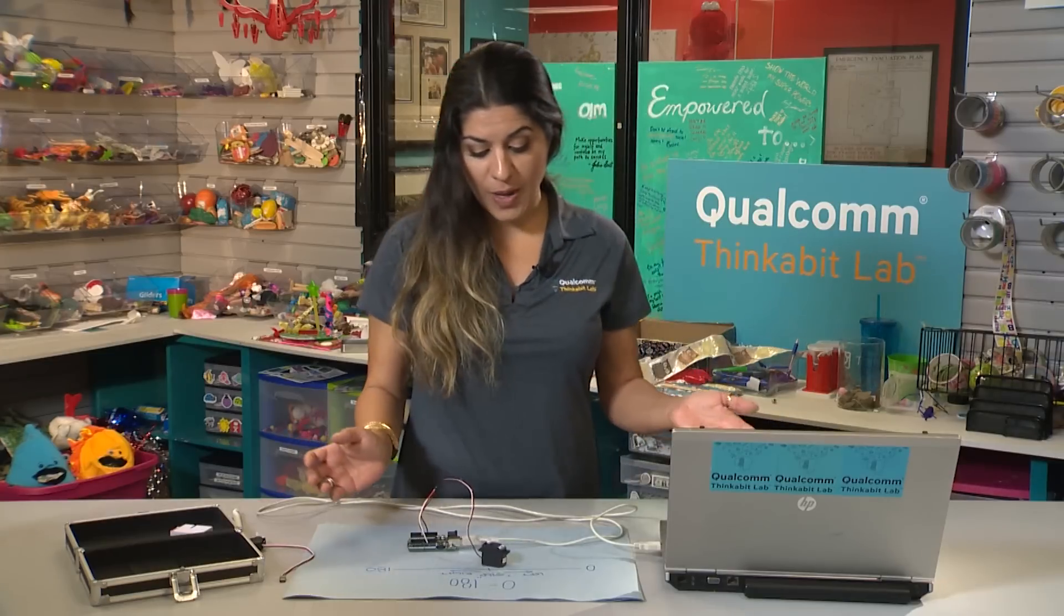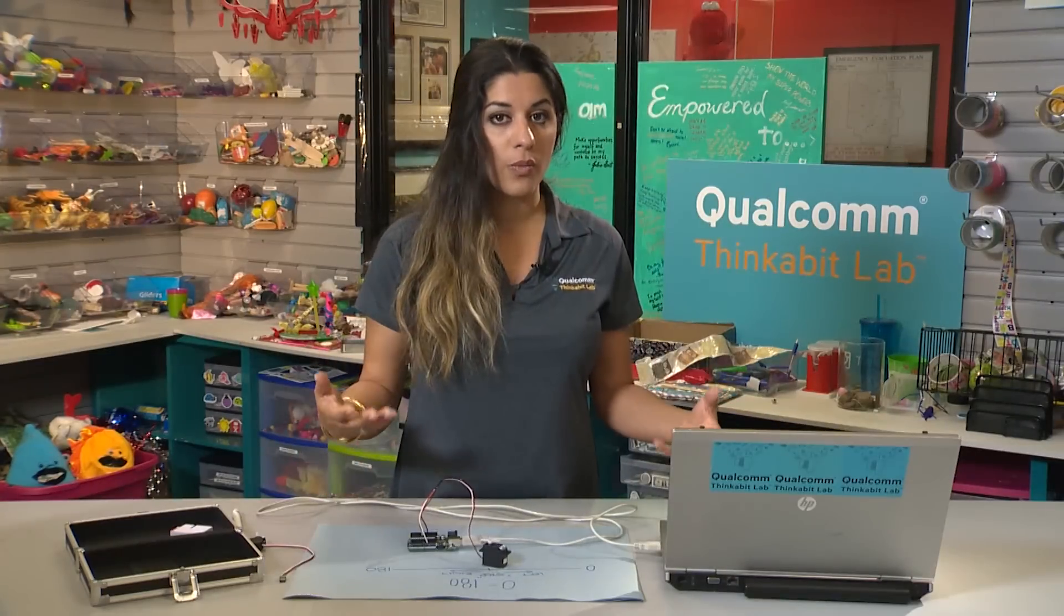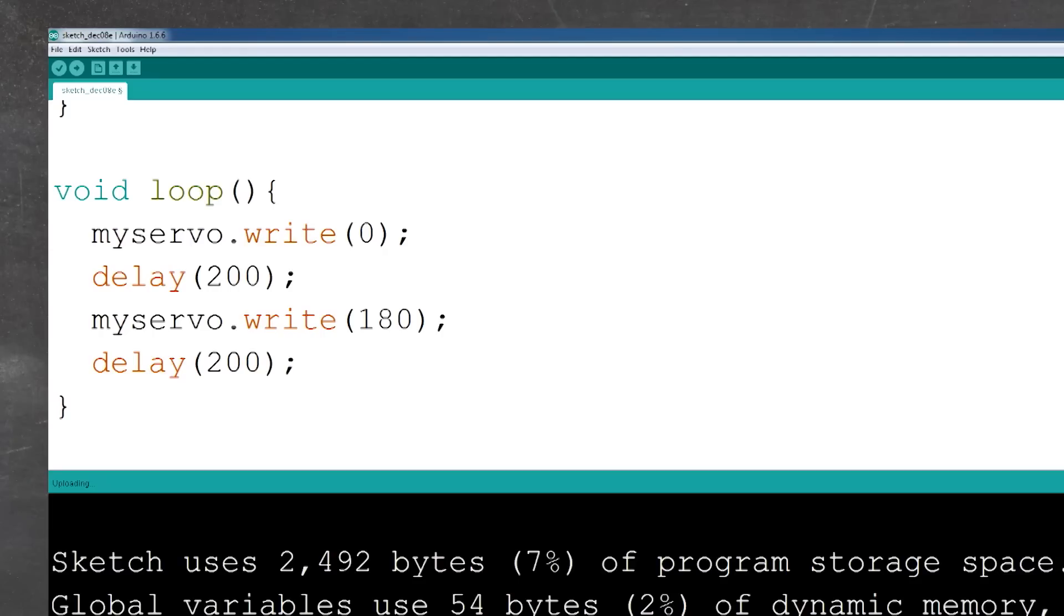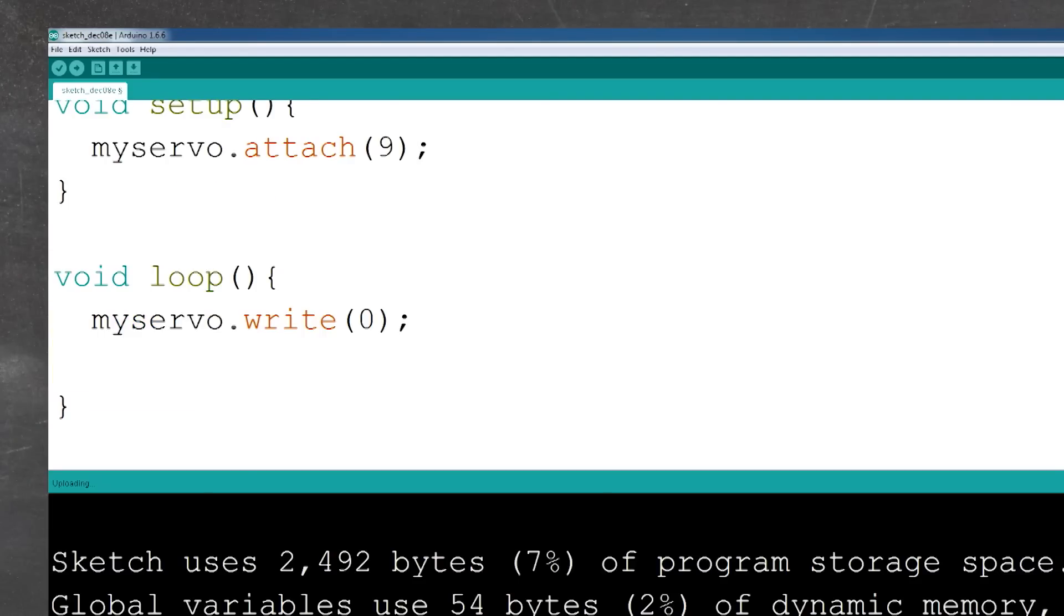Now let's say I don't want it to go back and forth. Maybe I want it to only go one way. So thinking about my number line, I'm going to erase three lines of code because I only want it to do one thing. I want it to spin to the right and I want it to spin slowly, so I'm just going to use the value 100.